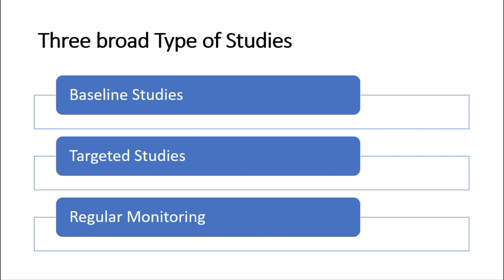Regular monitoring is intended to detect trends and changes in important variables, possibly to ensure that compliance conditions are being met. For example, for an industry that is permitted to discharge small amounts of pollutants into the environment.